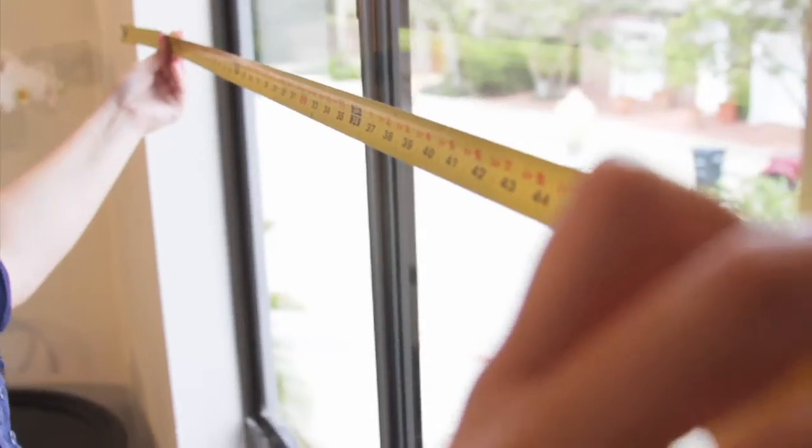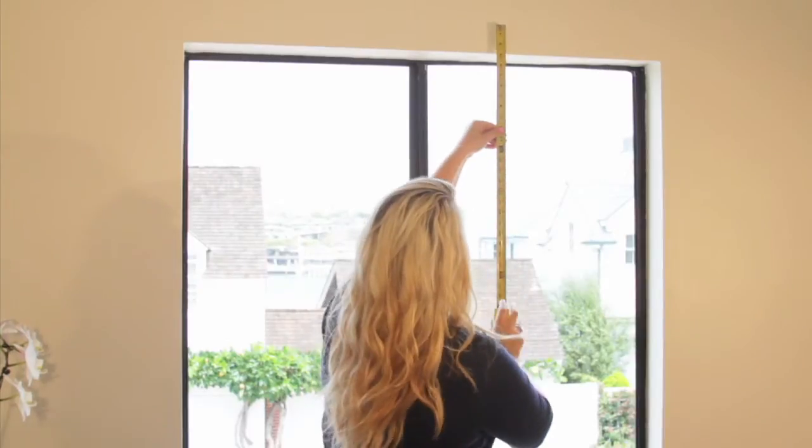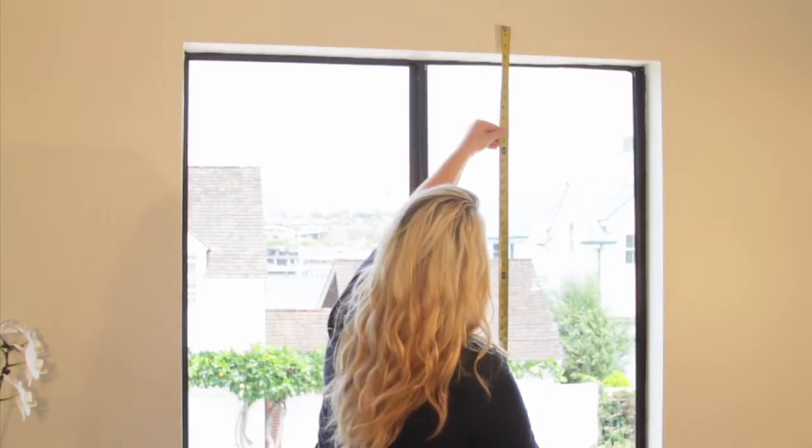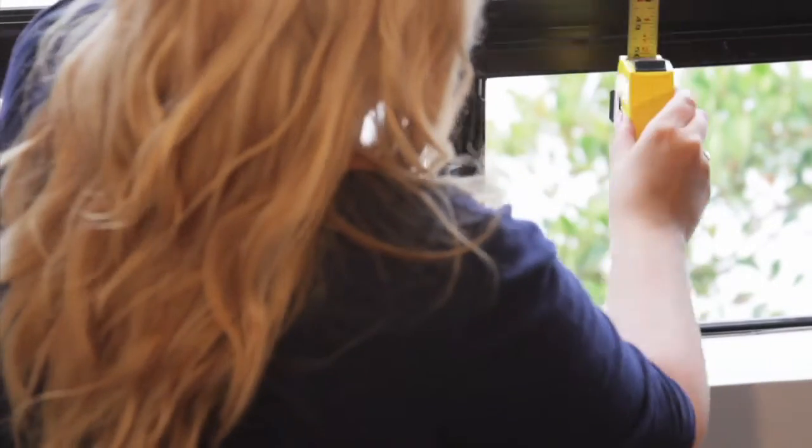However, you can add more for additional privacy if desired. This will be your width measurement. Next, measure the height of the area you want to cover, including any desired overlap. This will be your height measurement.